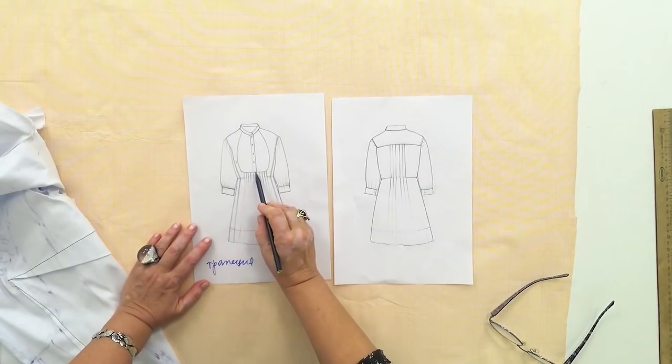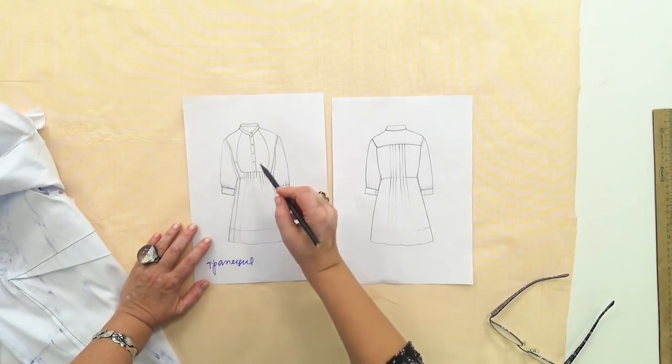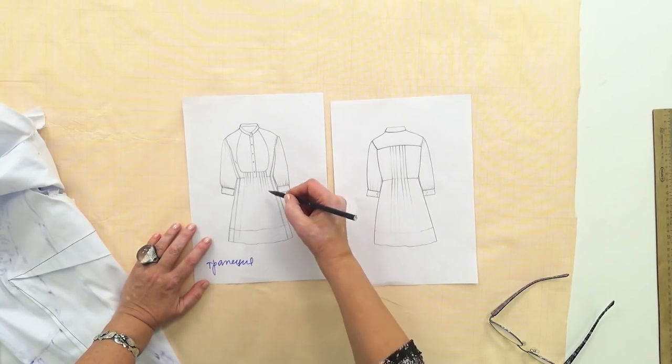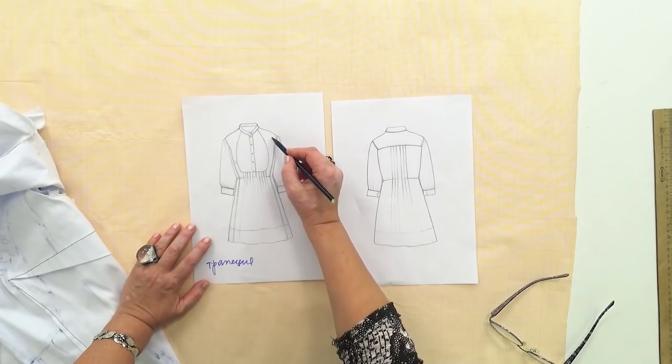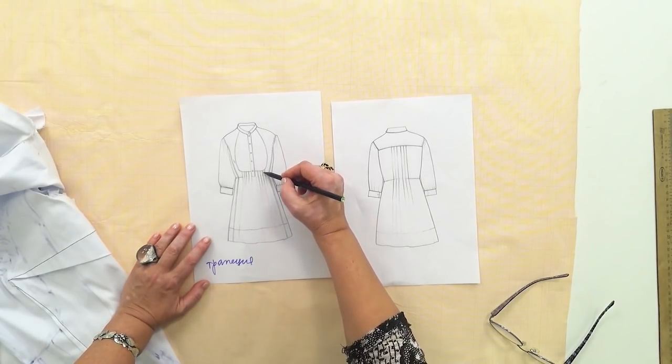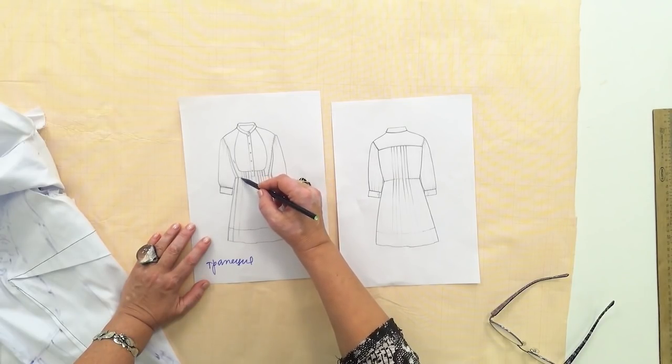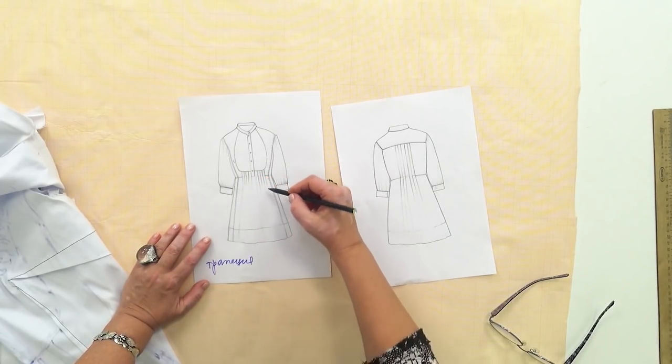Have a look at the sketch once again. The design is pretty complicated. There will be a yoke on the front. I drew it on the mockup. There will be seams here on the front. These parts will be cut separately, and the pleats together with the skirt.